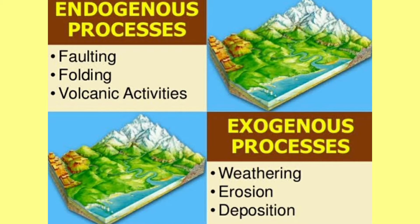The endogenous process is the internal process — by faults, folds, and by volcanic activities. Today we are going to discuss about the exogenous process, which is the external process. In this, weathering, erosion, and deposition are the three stages.